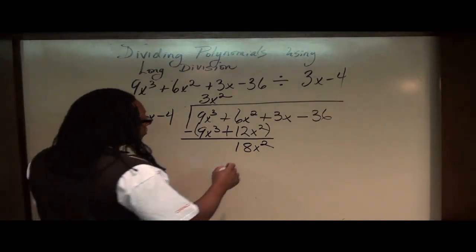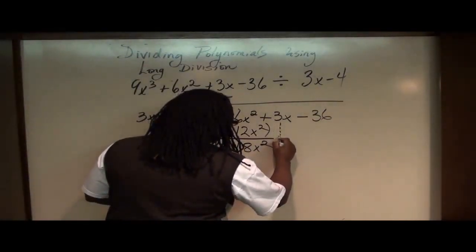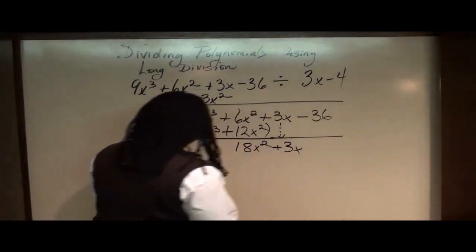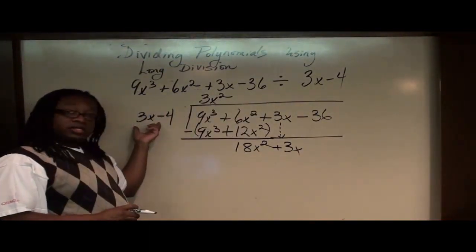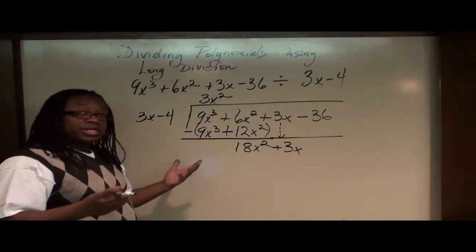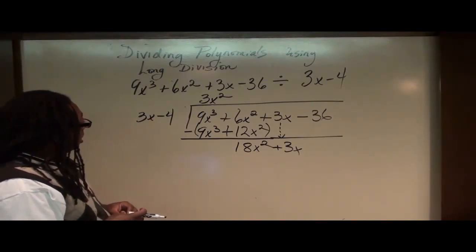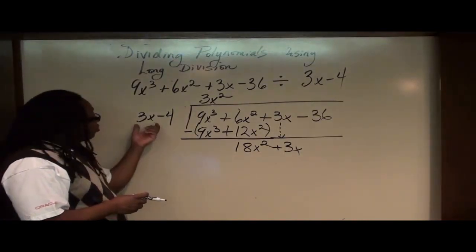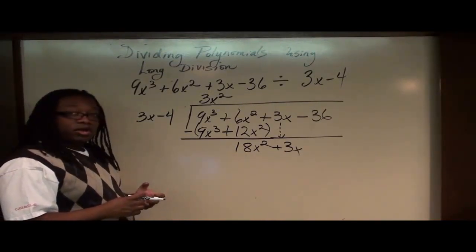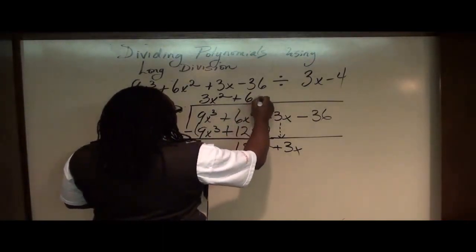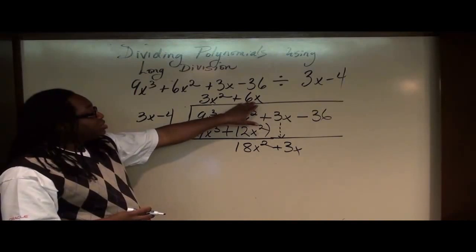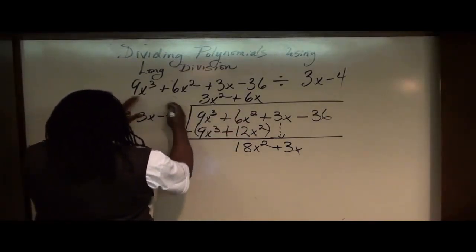Just like in regular long division, we bring down the next number, plus 3x. And we start over here. So what number can I multiply 3x with to give me 18x squared? Well, we know that 6 times 3 is 18, and 6x times 3x, because x times x is x squared, gives us 18x squared. So this next number must be 6x. So now we multiply 6x times the entire divisor here.